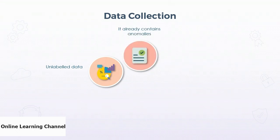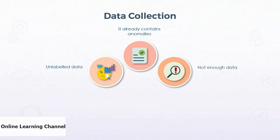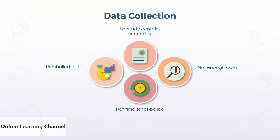If data used for training already contains anomalies, the anomaly detection model may include these within its mean and standard deviation calculations, affecting the reliability of the model at detecting new anomalies. Not enough data will result in a system unable to accurately predict or determine what is an anomaly because the mean is not broad enough — this will usually result in an excess of false positives. If the data is not time series based, the mean and standard deviation are difficult to calculate, there is no linear pattern to work from, and correlations to frequencies cannot be determined.